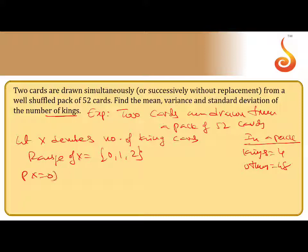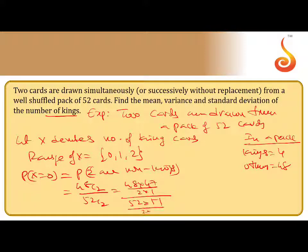First P of X equal to 0. Two cards are non-kings. That means you can select from other cards, that is 48 C2 by 52 C2. That is 48 into 47 by 2 into 1, this is 52 into 51 by 2 into 1. 48 into 47 by 51, you can cancel by 3 tables, 3 16, 3 17. So 4 4s, 4 13, that is 188 by 221.